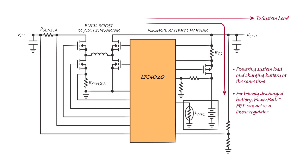This function is called instant-on because it provides a voltage to the output that is higher than the voltage of the heavily discharged battery as soon as an input source is available.